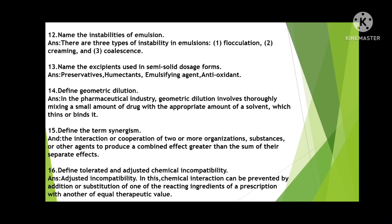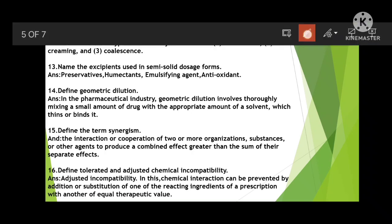The 12th question: name the instabilities of emulsion. The three instabilities are flocculation, creaming, and coalescence. Next: name the excipients used in semi-solid dosage form. If you don't know the semi-solid excipients, you can reference liquid dosage form excipients. Semi-solid dosage form excipients include preservatives, humectants, emulsifying agents, and antioxidants.